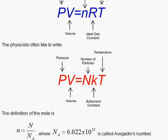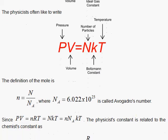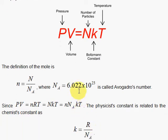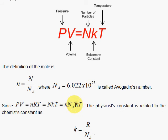If we come to the relationship between the two, we can see that the physicists' and chemists' equations are related by the definition of the number of moles. You take the number of particles and divide by Avogadro's number, which is a large number — 6.022 times 10 to the 23rd. When you do that, you can replace the physicists' number of particles with the number of moles times Avogadro's number. And when you do that, you can see that the chemist's R is equal to Avogadro's number times the Boltzmann constant, or the Boltzmann constant is the chemist's R divided by Avogadro's number.